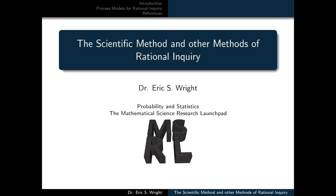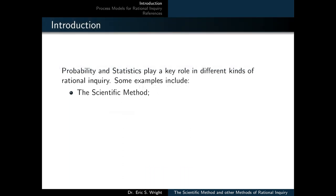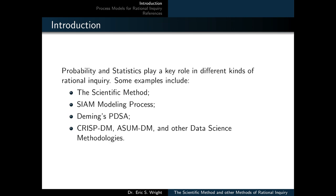Welcome to the scientific method and other methods of rational inquiry. This is the first video lesson in probability and statistics. Probability and statistics play a key role in different kinds of rational inquiry. Some examples include the scientific method, the SIAM modeling process, Deming's PDSA or Plan Do Study Act, CRISP-DM, ASUM-DM, and other data science methodologies.